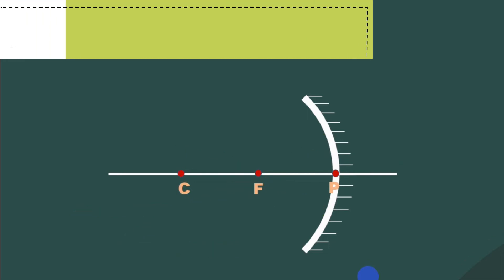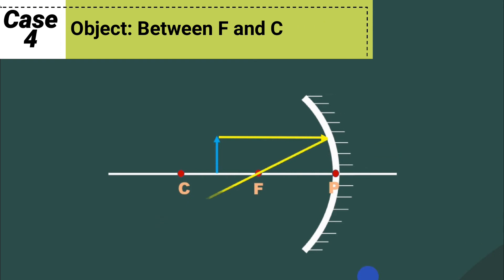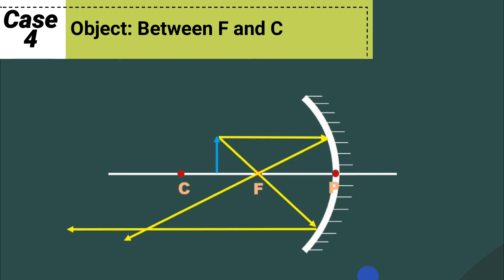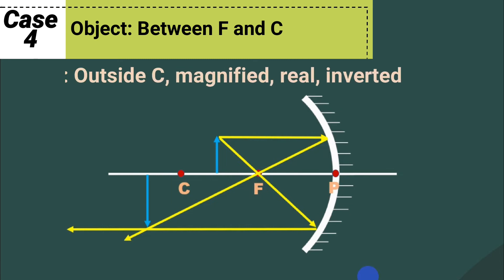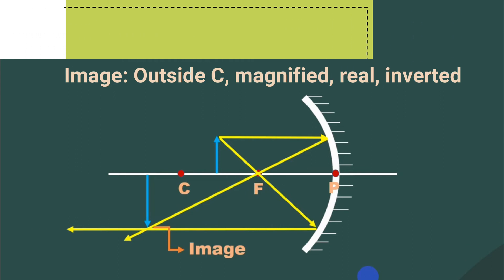For case 4, the object is located between the focus and the center of curvature. Using rule 1 for the first light ray and rule 3 for the second light ray, the two light rays converge at a point beyond the center of curvature and below the principal axis. Therefore, when an object is placed between the center of curvature and focus, the image is formed behind or outside the center of curvature, the image is larger than the object or magnified, it is real and inverted.